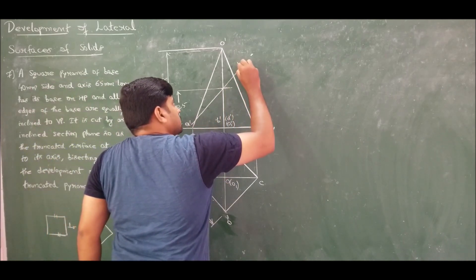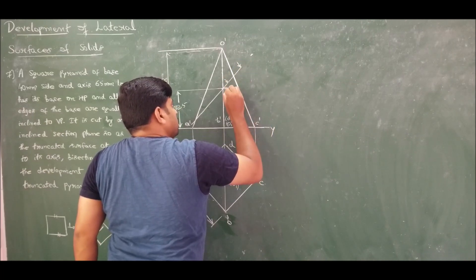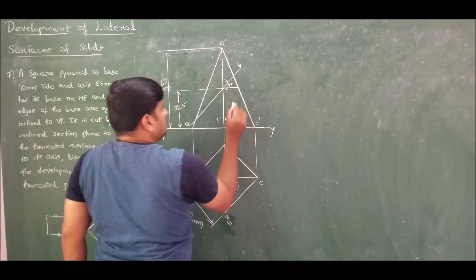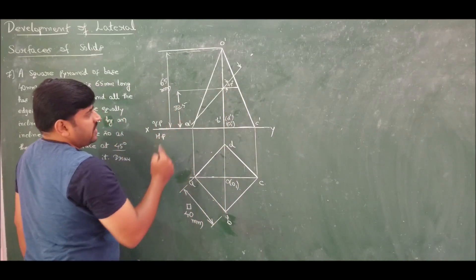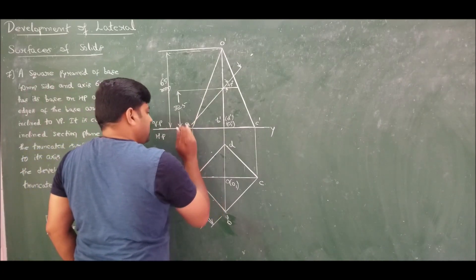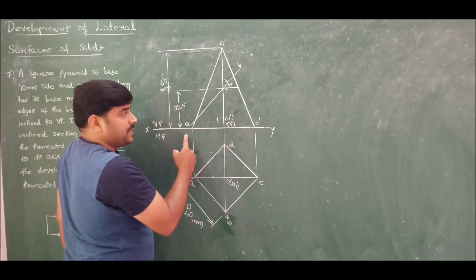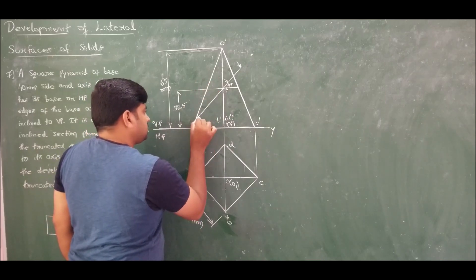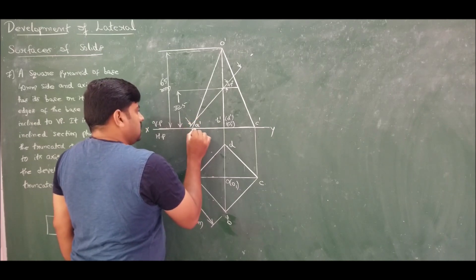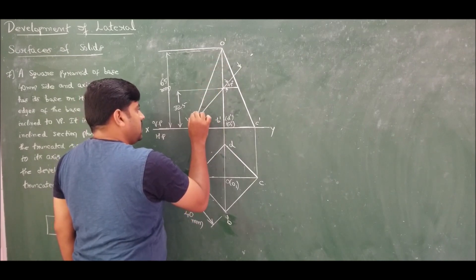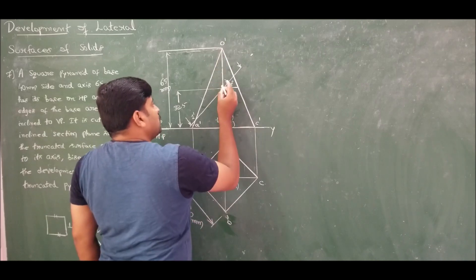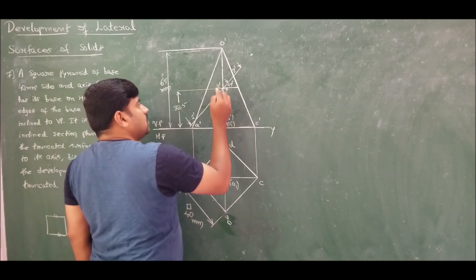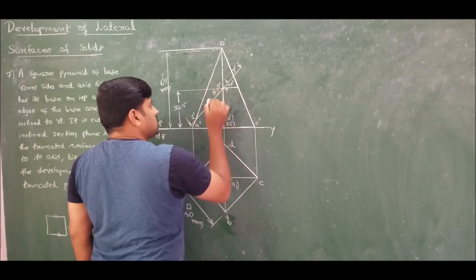The cutting plane is inclined at 45 degrees. Observe that this cutting plane is not intersecting any base edges A to B, B to C, C to D, or D to O — it is cutting only the slant edges. Therefore all measurements will be taken from the front view only. For slant edge A to O this will be 1', for B to O this will be 2', for C to O this will be 3', and for D to O this will be 4'.